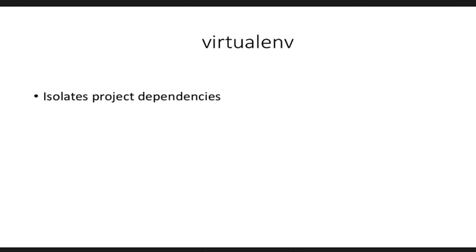Virtualenv helps achieve two main purposes. First, it isolates project dependencies. With pip you can get all the dependencies your project depends on, but what if you have more than one Python project, each depending on a different version of different libraries? You might have a project depending on an older version of requests and another using the latest version. Virtualenv allows you to isolate dependencies on a per-project basis. Virtualenv also serves another more important purpose: it isolates system dependencies.